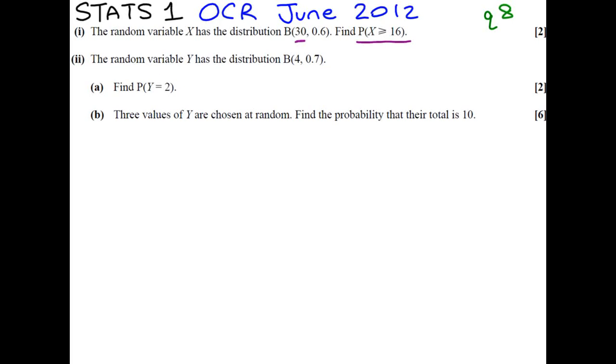Hi everyone, welcome to my Stats 1 OCR June 2012 past paper. We are going to look at question 8. If you read the first part, it says a random variable x has a distribution B(30, 0.6). That means it's a binomial distribution, and we are doing n equals 30 trials. Our probability for a success in each trial is 0.6.